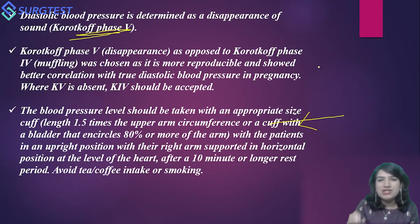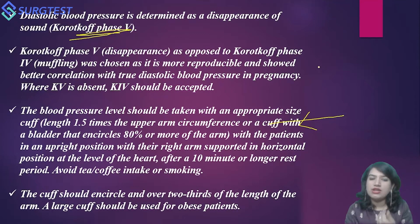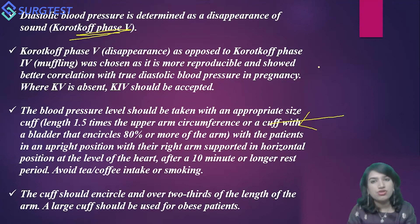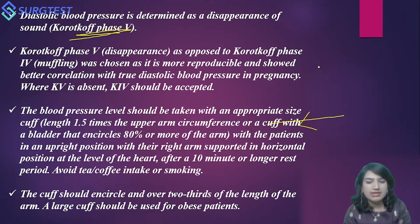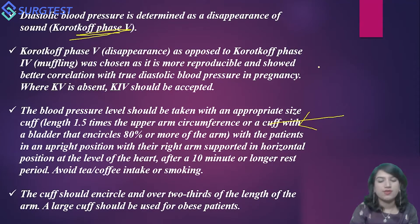These are the important factors to keep in mind while measuring blood pressure. The cuff should encircle over two-thirds of the length of the arm, and the larger cuff should be used for obese patients. You should have cuffs customized for different BMIs — at least a small, moderate, and large size — available in your OPDs as well as the inpatient department.